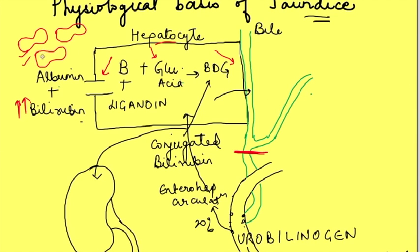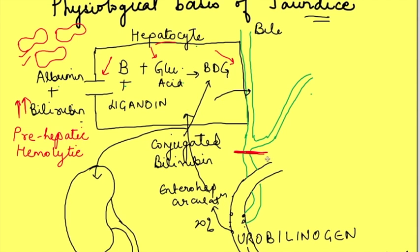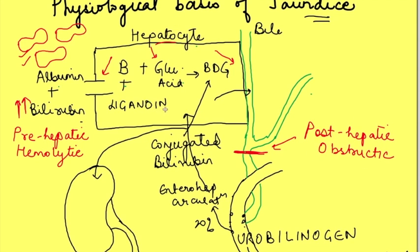Depending on where the problem is occurring, there are different names for jaundice. If it occurs before the hepatocyte — at the level of destruction of RBCs — it is known as pre-hepatic jaundice or hemolytic jaundice. If the problem is obstruction of the bile duct, it is known as post-hepatic jaundice or obstructive jaundice. If hepatocytes are not able to perform their function and there is derangement of liver function, it is known as hepatic jaundice.